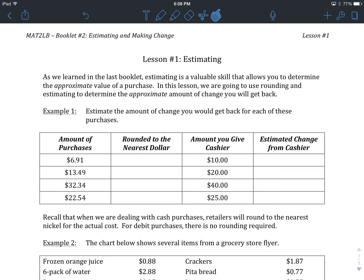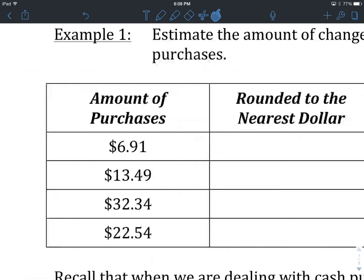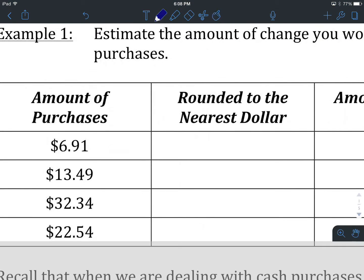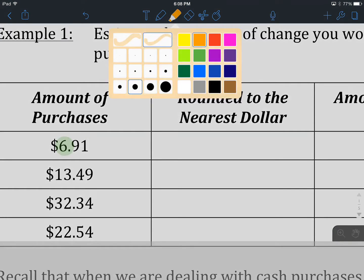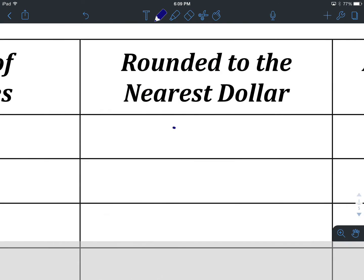Our first purchase, $6.91. Let's round that to the nearest dollar. We're looking for the dollar place value, which is our 6. We look to the digit that comes after it, or to the right of our digit that we want to round to. And 9 forces us to round up, so our nearest dollar is going to be $7.